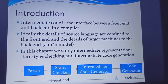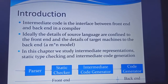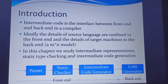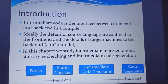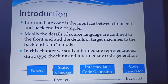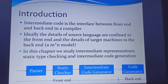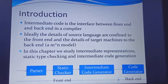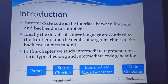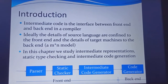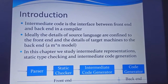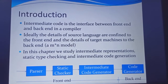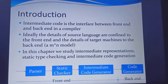The back end includes code optimization and code generation, including intermediate code generation. Ideally, the details of the source language are confined to the front end and the details of the target machine to the back end. In this chapter, we study intermediate representations like static type checking and intermediate code generation.